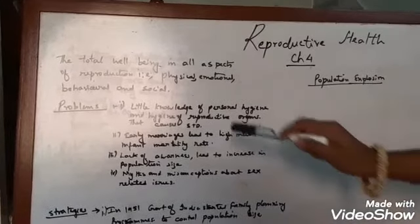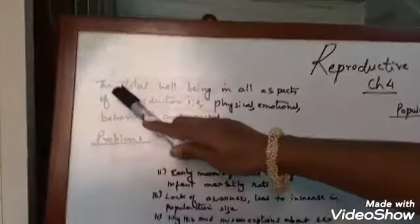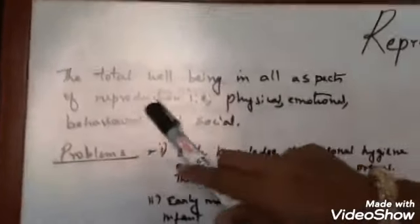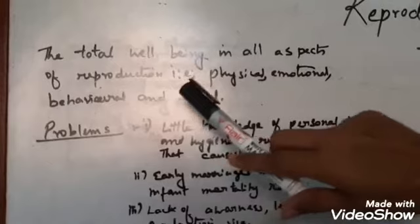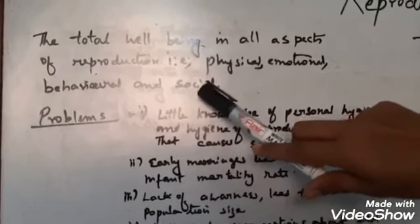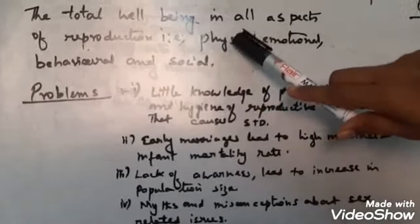What do you mean by Reproductive Health? Reproductive Health means the total well-being in all aspects of reproduction, that is physical, emotional, behavioral and social aspects of a person.